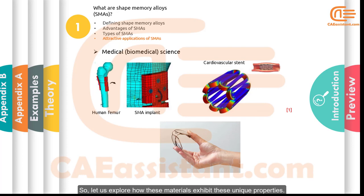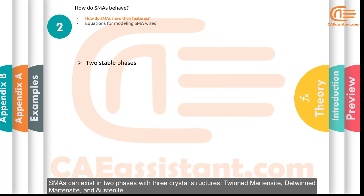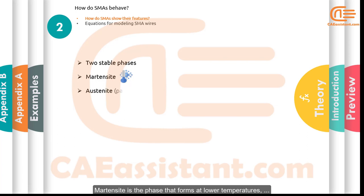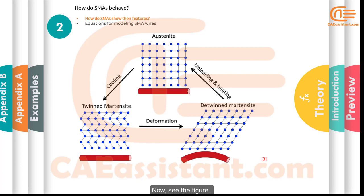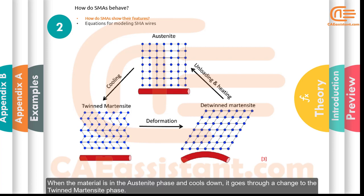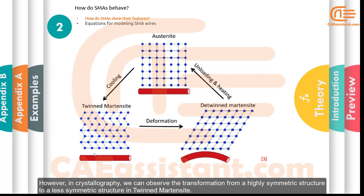SMAs can exist in two phases with three crystal structures: twinned martensite, detwinned martensite, and austenite. Martensite is a phase that forms at lower temperatures, while austenite occurs at high temperatures. The shape memory effect in SMAs is controlled by a phase change between austenite and martensite. When the material is in the austenite phase and cools down, it transforms to the twinned martensite phase without impacting the material's macroscopic shape. In crystallography, we observe a transformation from a highly symmetric to a less symmetric structure.